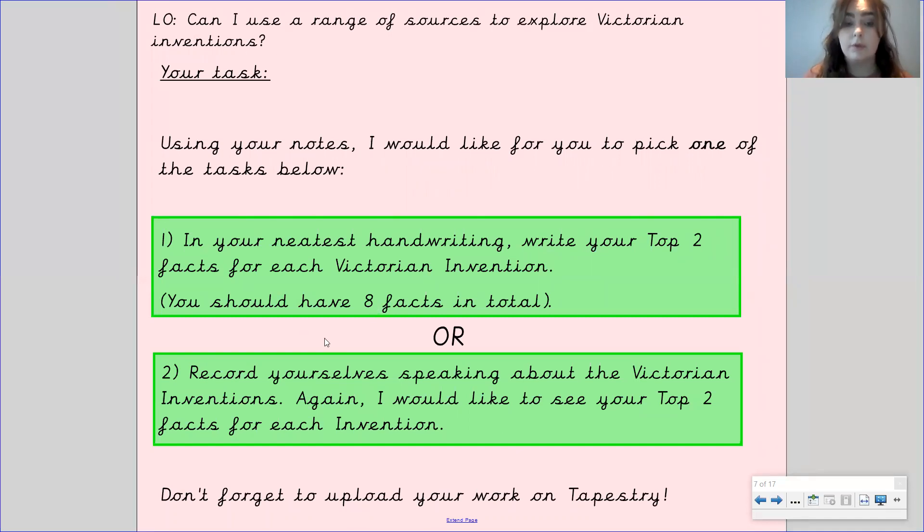Or what you could do is, if you are able to and mummies and daddies are able to record you, then I would like for you to record yourselves speaking about the Victorian inventions. Again, I want to see your top two facts for each invention, which means there should be eight facts in total.